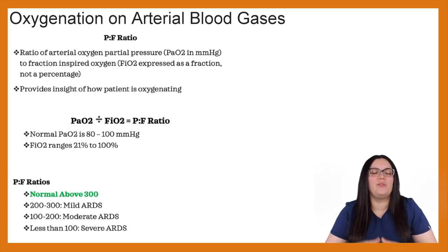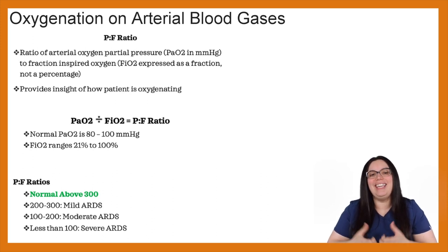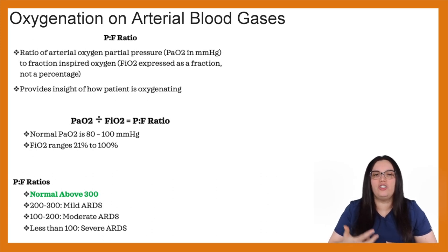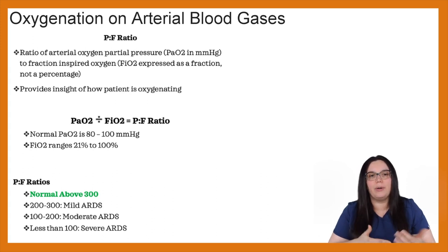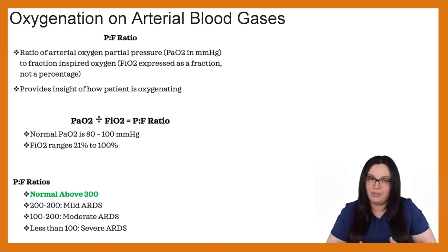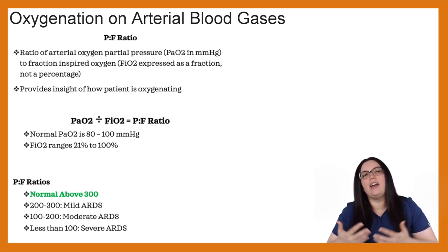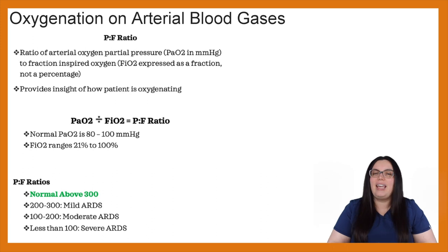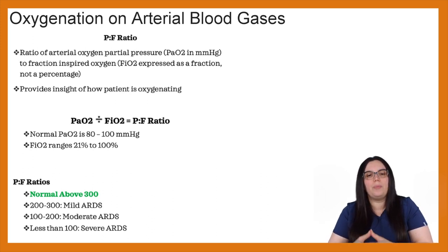Let's talk about something very important when it comes to oxygenation on arterial blood gases: our PF ratio. The PF ratio is the ratio of arterial oxygen partial pressure, which is our PaO2 in millimeters of mercury, to fraction of inspired oxygen, FiO2, expressed as a fraction — not a percentage — on arterial blood gases. It provides insight on how our patients are oxygenating. The formula is: PaO2 divided by FiO2 equals our PF ratio.